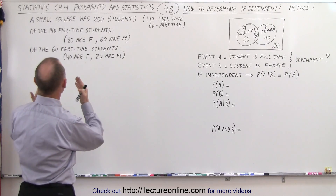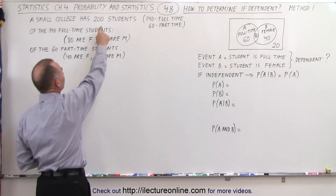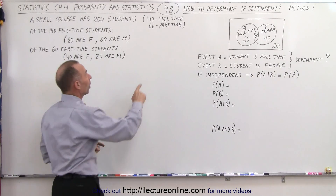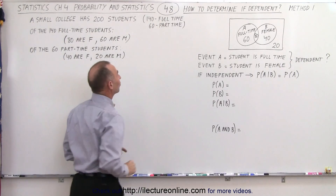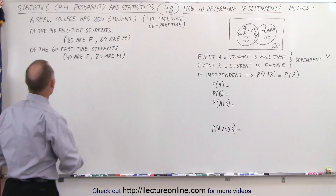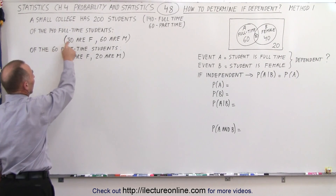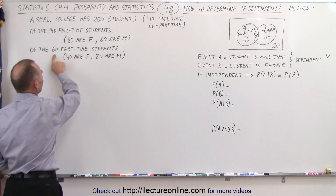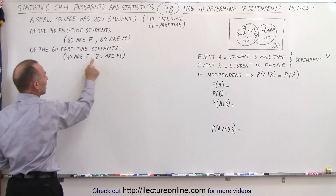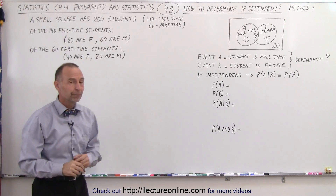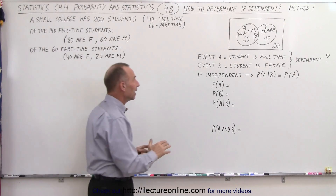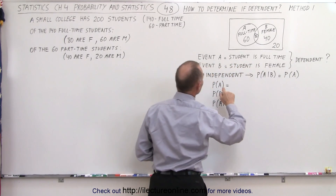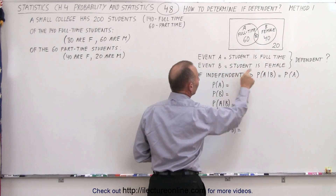The example we're going to use is a small college that has a total of 200 students. Of those 200 students, 140 are full-time and 60 are part-time. Of the 140 full-time students, 80 are female and 60 are male. Of the 60 part-time students, 40 are female and 20 are male. So the two events are Event A: a student that is full-time, and Event B: a student that is female.